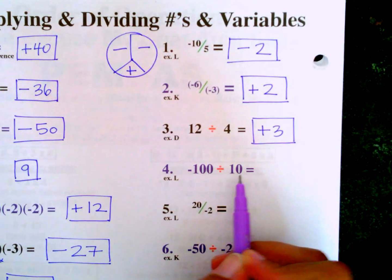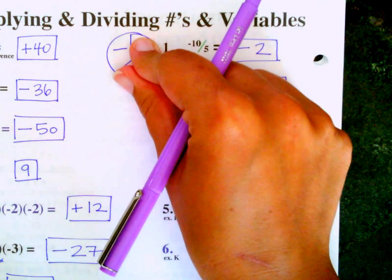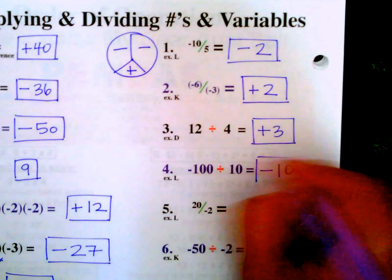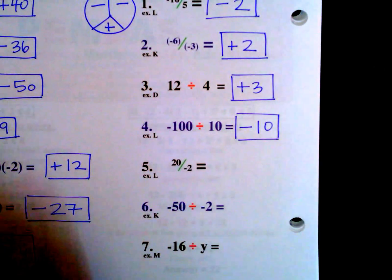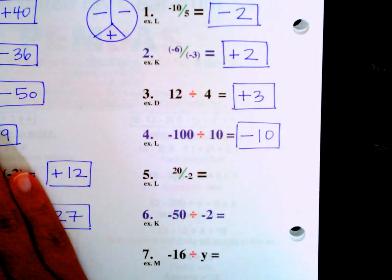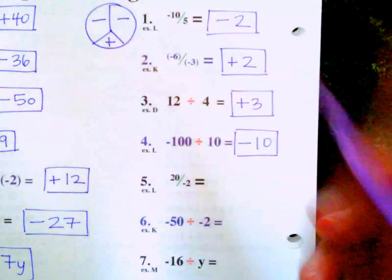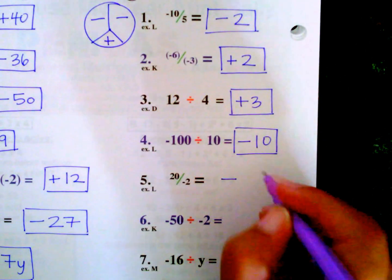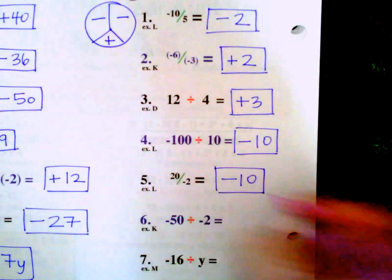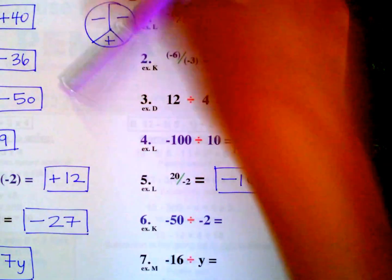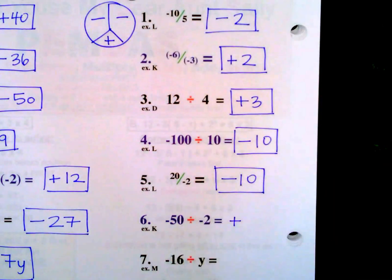Number 5: positive 20 divided by negative 2 — positive and negative makes negative — 20 divided by 2 is 10, so negative 10. Number 6: negative 50 divided by negative 2 — negative and negative makes positive — 50 divided by 2 is 25, so positive 25.